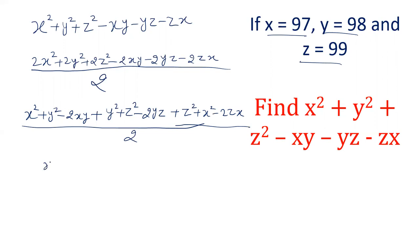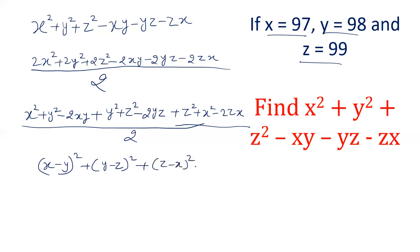Now this is (x - y)², this is (y - z)² — because a² + b² - 2ab is (a - b)². And similarly, this is (y - z)² and this is (z - x)², all divided by 2.